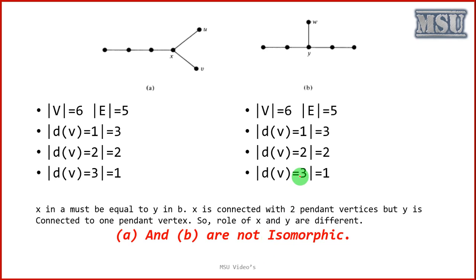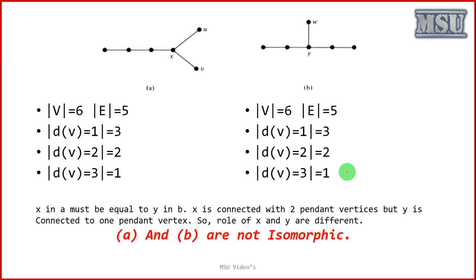If you want to check for isomorphism, the first and foremost conditions are number of vertices and number of edges. The third condition is the role played by one vertex — there must exist another vertex in the other graph playing the same role. Even though these three conditions are satisfied, some graphs may still not be isomorphic.